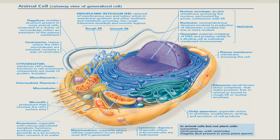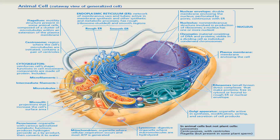Ribosomes are small complexes that make proteins, either free in the cytosol or bound to the rough endoplasmic reticulum or nuclear envelope. The Golgi apparatus is an organelle that is active in synthesis, modification, sorting, and secretion of cell products. There are many other cell organelles — if you want to go into detail with the structure of the cell, you can go through my video on cell biology. This slide is just for a small recap.